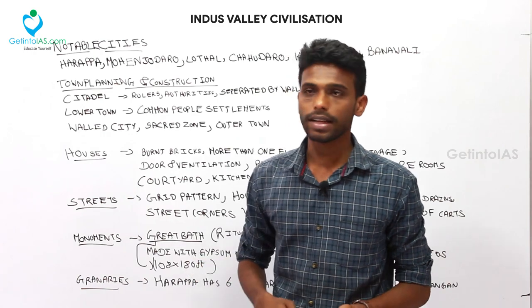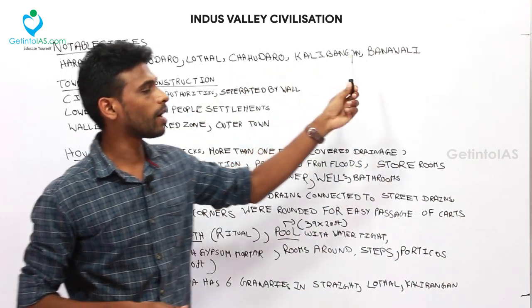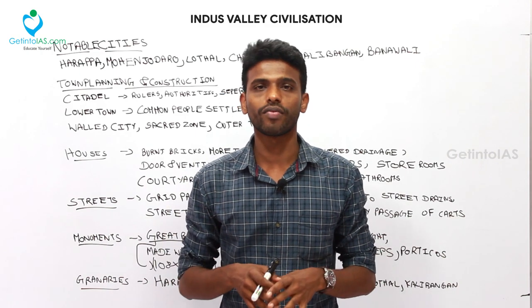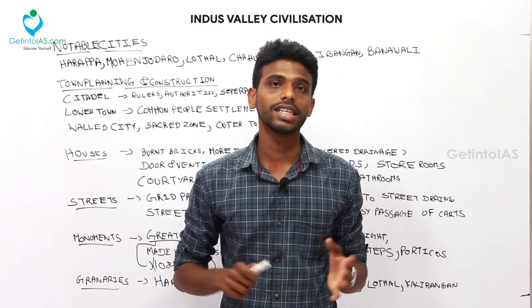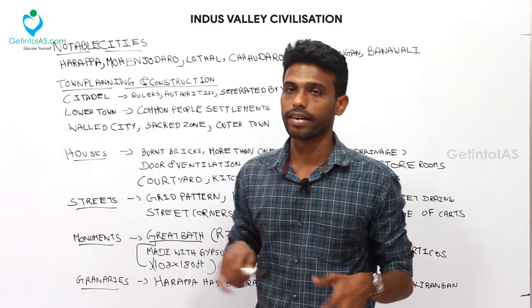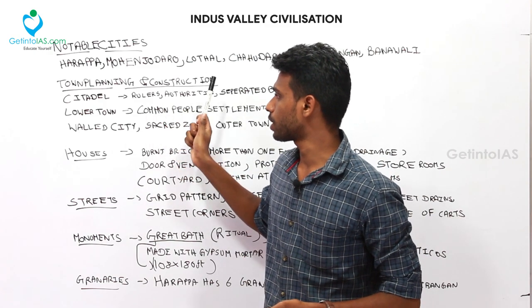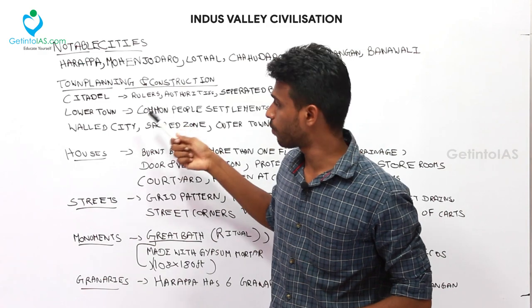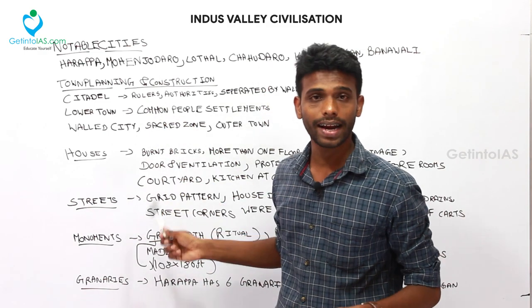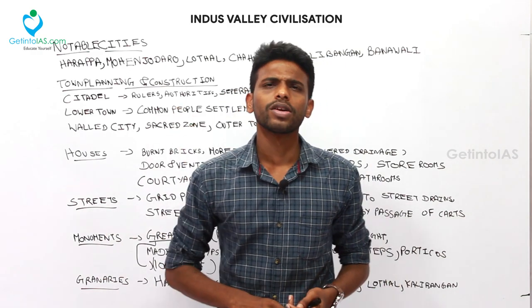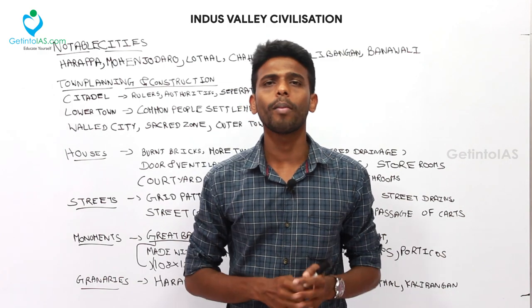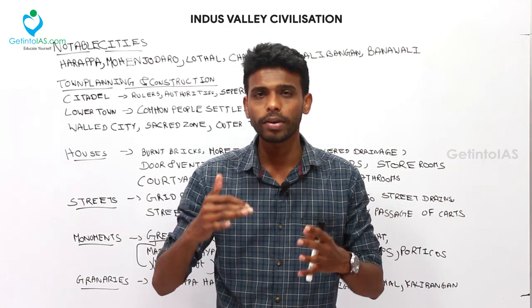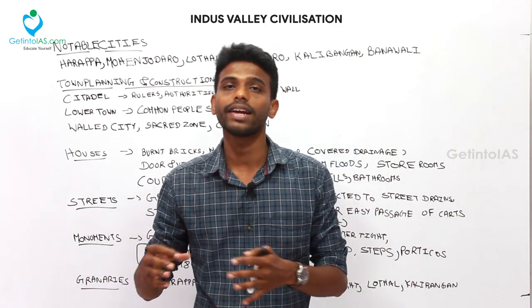The notable cities of the Indus Valley Civilization are Harappa, Mohenjo-daro, Lothal, Chanhudaro, Kalibangan, and Banawali. All these cities had an important unity in terms of construction and way of life, which is why they were collectively termed Indus Valley Civilization. For town planning: every city was divided into two parts — the citadel and the lower town. The citadel was the upper town for ruling authorities, containing important monuments like the Great Bath and granaries. The lower town was where common people lived.